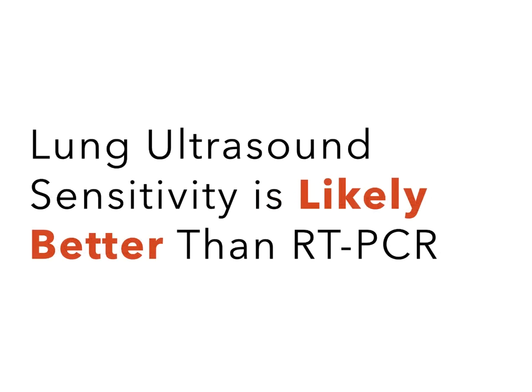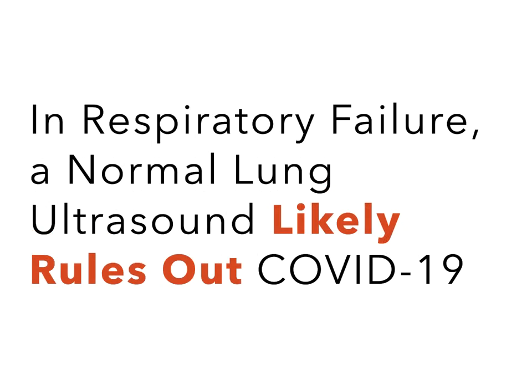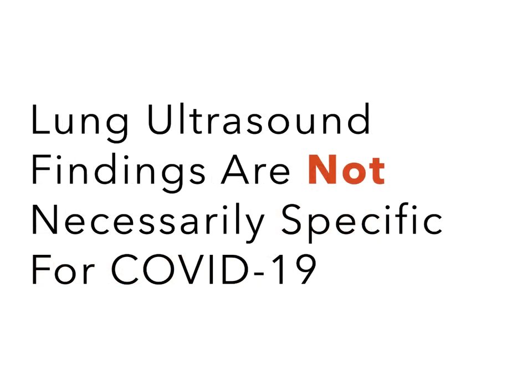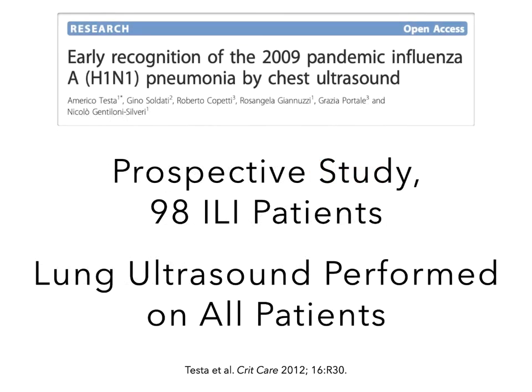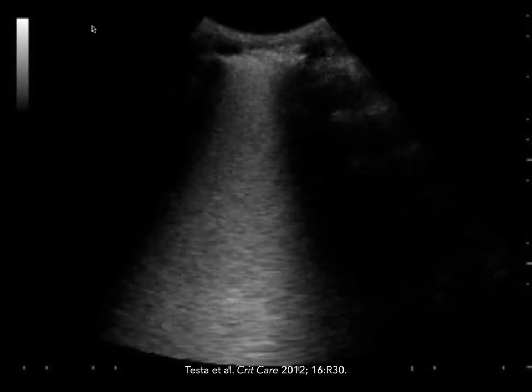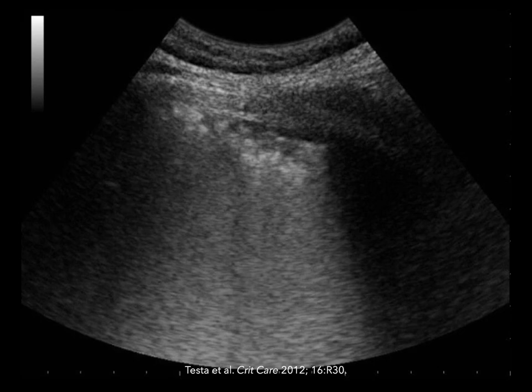So this is where ultrasound steps in. Extrapolating from the COVID-19 CT studies in the literature, lung ultrasound sensitivity is likely better than PCR testing and also likely better than chest x-ray — though this hasn't been formally studied, it is extrapolation from the CT data. The majority of patients have peripheral-based lung pathology, which is where ultrasound performs best. In a patient with respiratory failure, a normal lung ultrasound likely rules out COVID and you should search for another cause. But remember that lung ultrasound findings are not necessarily specific to COVID — Testa describes their group's experience with H1N1 where they discovered very similar findings like B lines, pleural irregularity, and subpleural consolidations. These findings are all consistent with viral pneumonia.